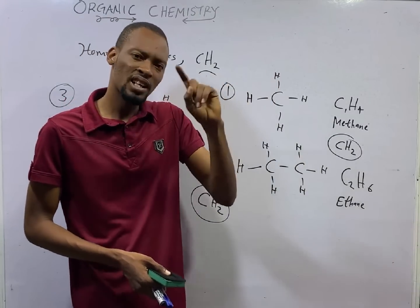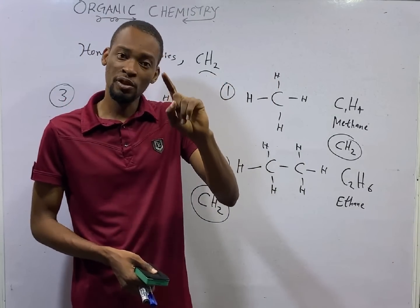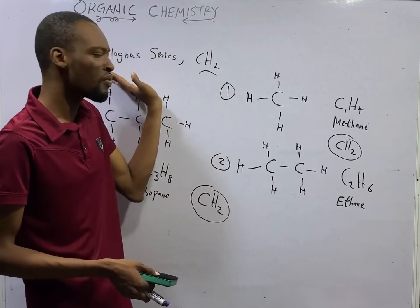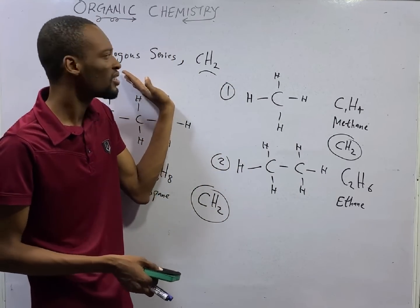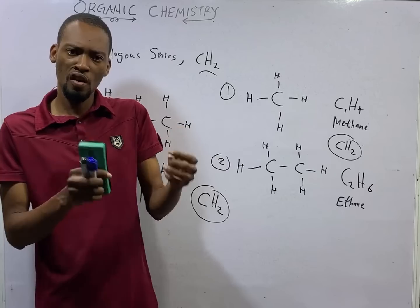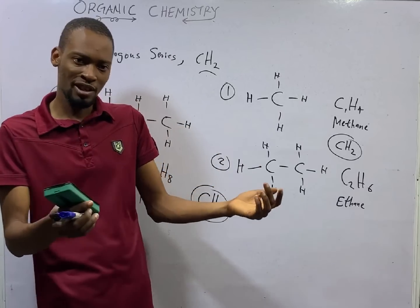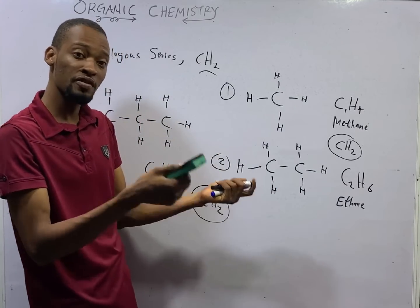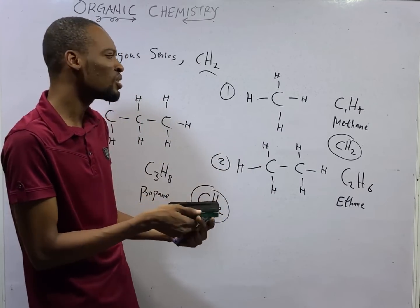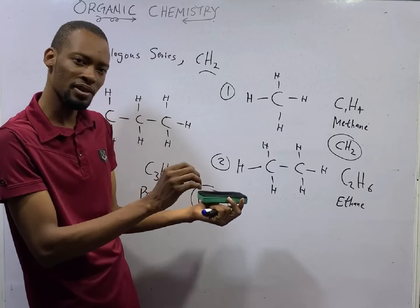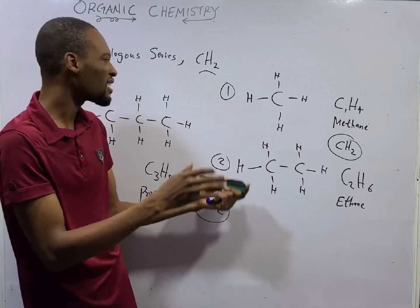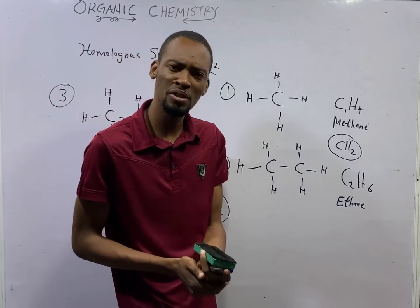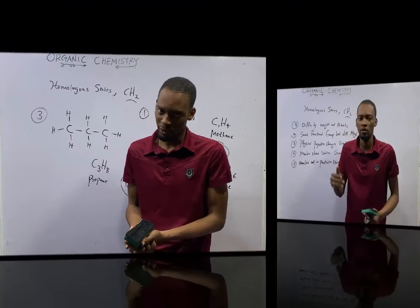The second characteristic of homologous series is that each family member of the series has a similar method of preparation. So when you choose a representative member and you know the method of preparation, other members of that family will have a similar method of preparation.